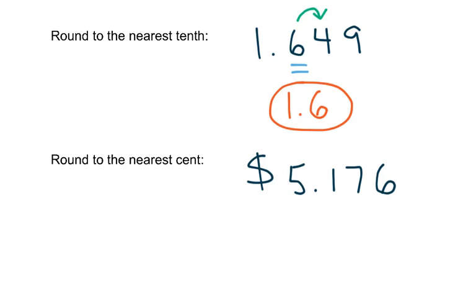One last example. A lot of the problems we work on in this class, in the consumer math chapter especially, will deal with money. You might see the instruction 'round to the nearest cent.' Rounding to the nearest cent — there are 100 cents in a dollar — so that's the same thing as rounding to the hundredths place. So when you see 'round to the nearest cent,' we're rounding to the nearest hundredth. We've identified the hundredths place, we look one space to the right, that number is five or bigger, so we're going to round up, and rounding this to the nearest cent will be $5.18.